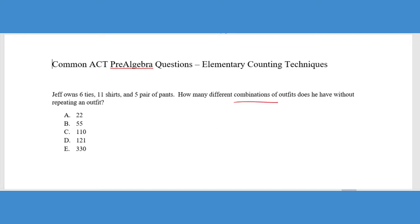Now don't let this word combination confuse you. This is really just kind of saying how many different ways can he wear the ties, the shirts, and the pants. And so the way that you do this is you multiply the given information. So if we talk about each one of them as their own event, we've got the shirts, the ties, we've got the pants. So we have six ties, 11 shirts, and five pairs of pants. And if we were to multiply those together, we would get 330, which is answer choice E.